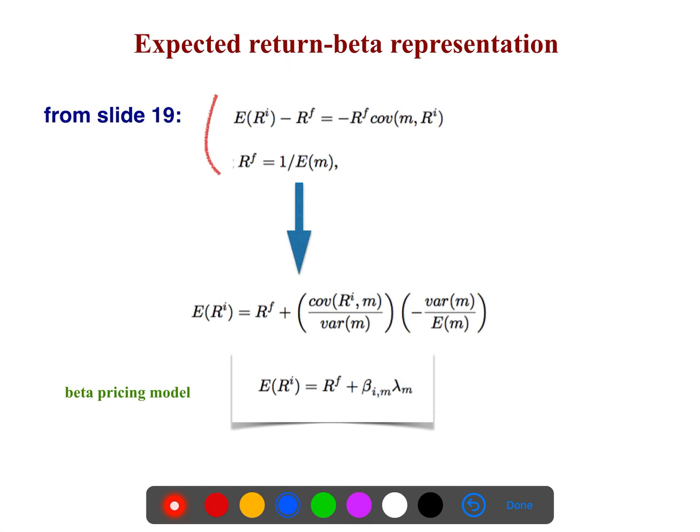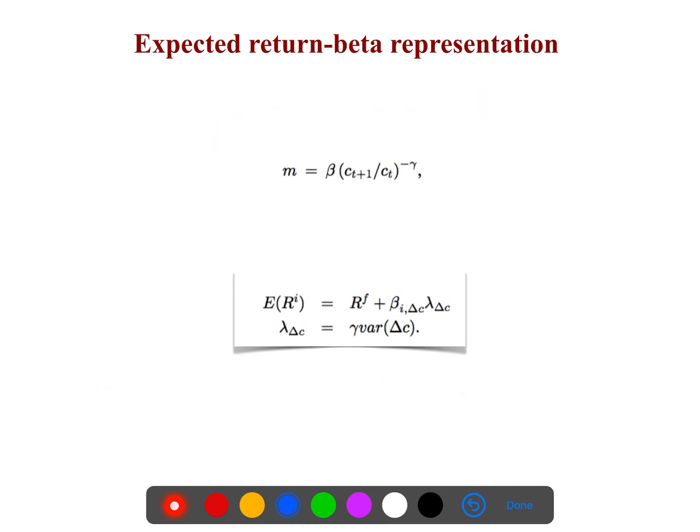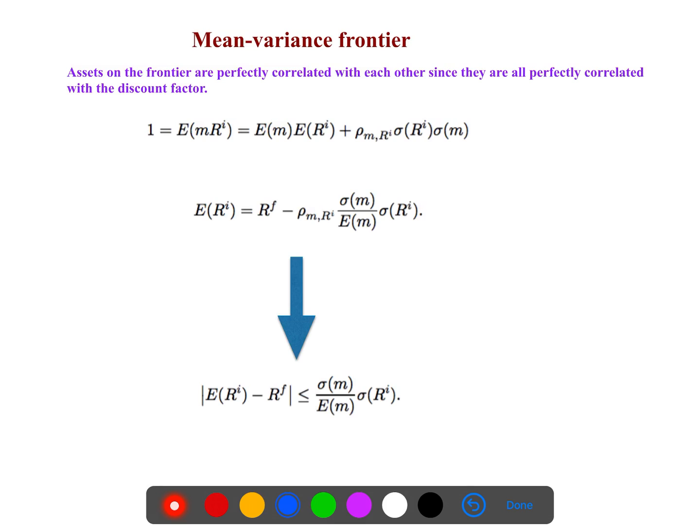Expected return beta representation. We proved that this formula, and if you just combine them, you get the beta pricing model. This is the expected beta representation if you use this specific utility. You can use any utility, but if you use this utility, you have this equation.